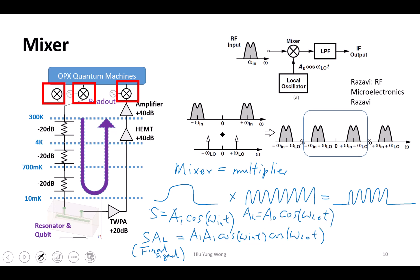This equals AL A1 A0 divided by 2, cosine omega in minus omega LO t, plus cosine omega in plus omega LO t. So I do this just to show you that when you mix them together in the frequency domain, you actually create two signals. One has the frequency equal to the difference of their signal, another is the frequency equal to the sum of their signal.